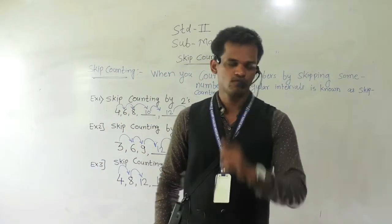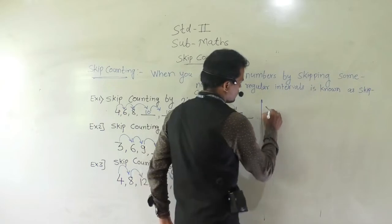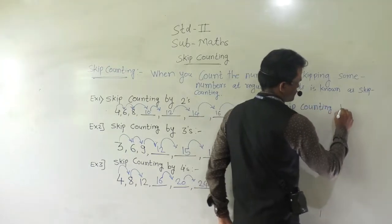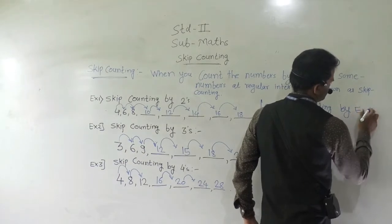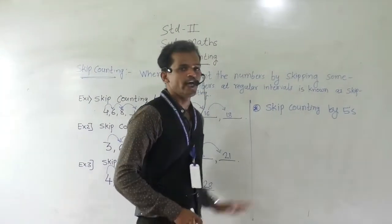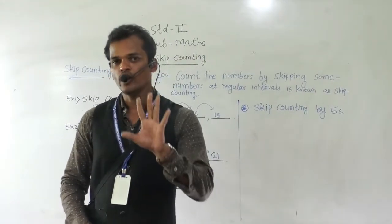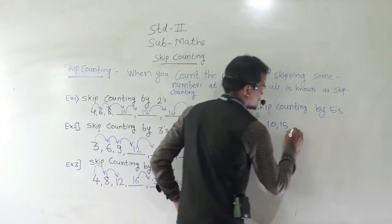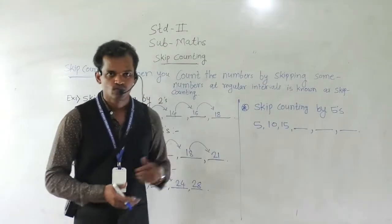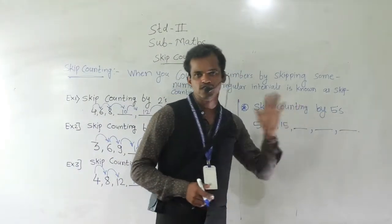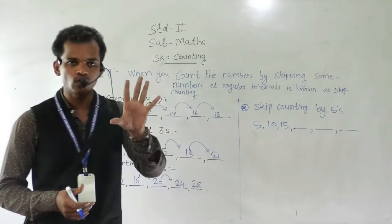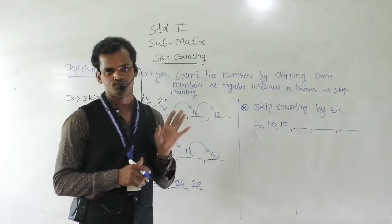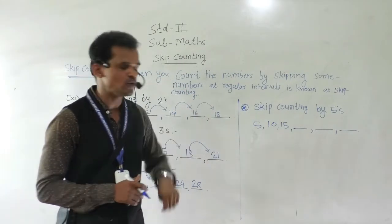Now we will see skip counting by 5. Every time when we have to skip 5, we write the next number. So suppose 5, then 10, and so on. So here: 5 plus 5 means counting 5, 6, 7, 8, 9, 10. So 5 plus 5 is 10.